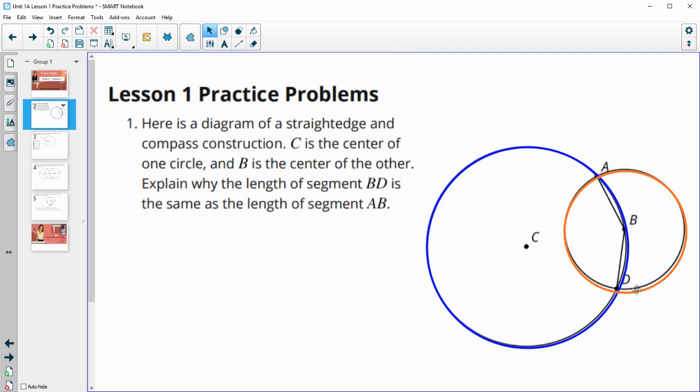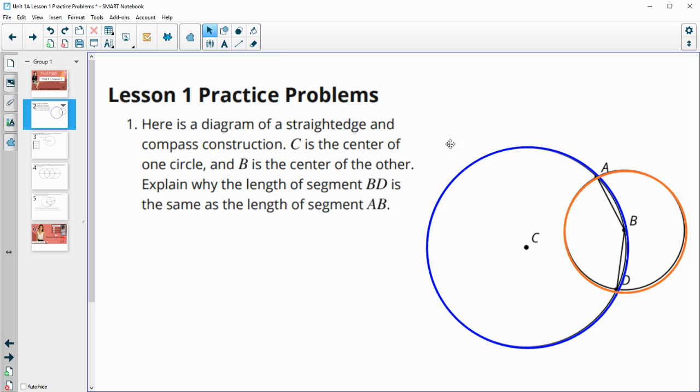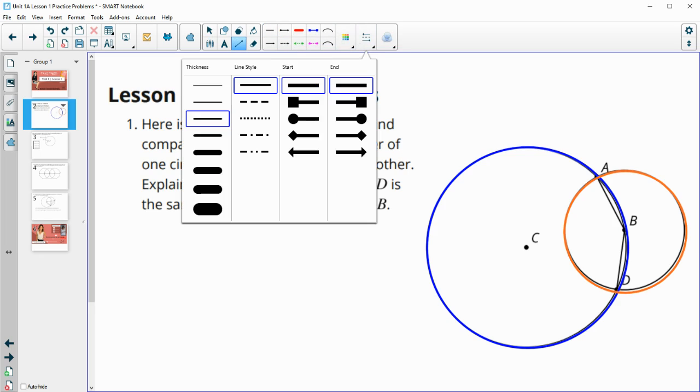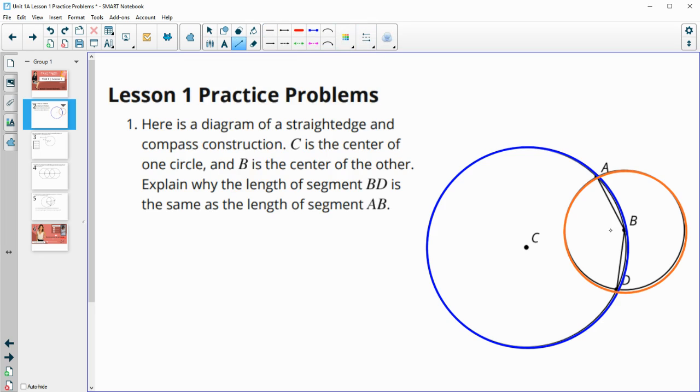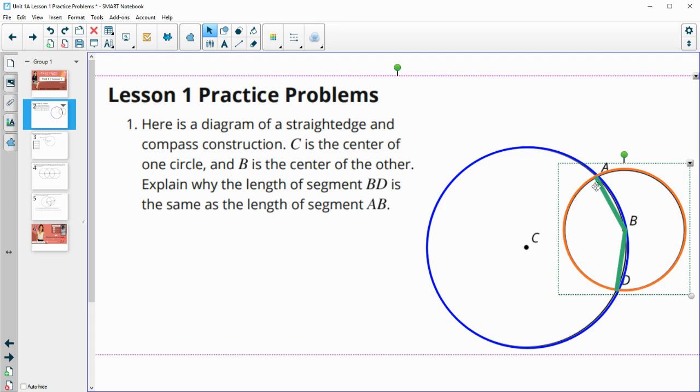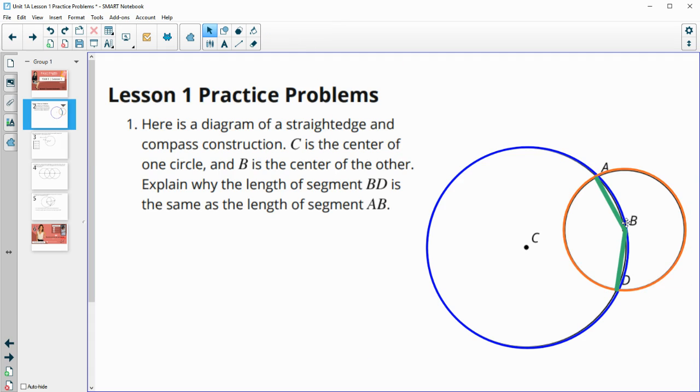Explain why the lengths of BD and AB are the same length. So why are those green segments the same length? That would be because these green segments here are both centered at B, or they start at B, and they go to the orange circle. So they are both radii.